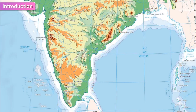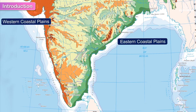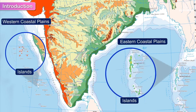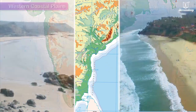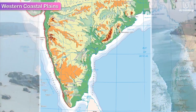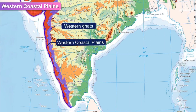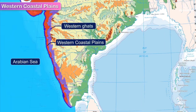The coastal plains comprise the western coastal plains and the eastern coastal plains and islands. The western coastal plains form a strip of land lying between the Western Ghats and the Arabian Sea.